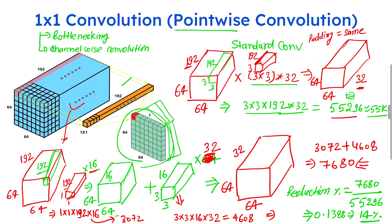This particular part performs compression, or you can say it is doing a squeeze. When you have a large number of channels as input, it is advisable to use 1x1 convolution to reduce the channel count before applying larger filters. These 1x1 convolutions are mainly used in Inception networks, MobileNet, EfficientNet, and in any advanced CNN algorithms to reduce the number of parameters.